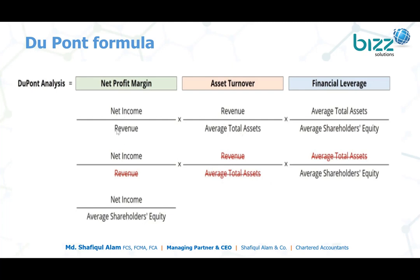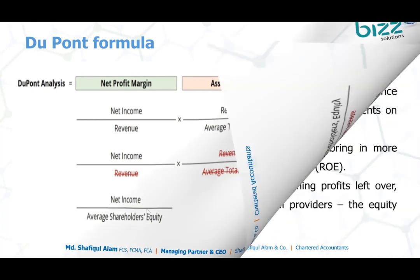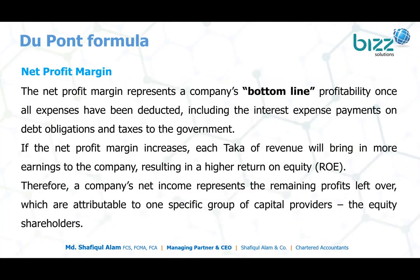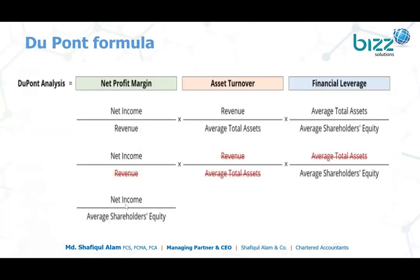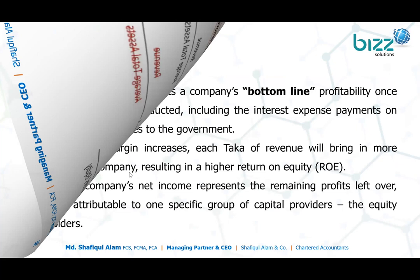When we talk about net profit divided by revenue, that is net profit margin. The total asset and total revenue terms relate to asset turnover. The average shareholders' equity against assets gives us equity performance analysis. Net profit margin is net profit divided by total revenue — it is the net margin.